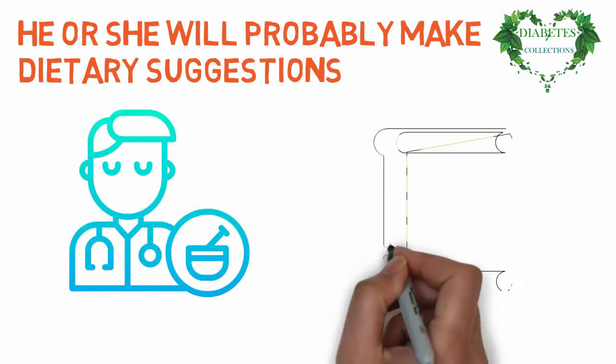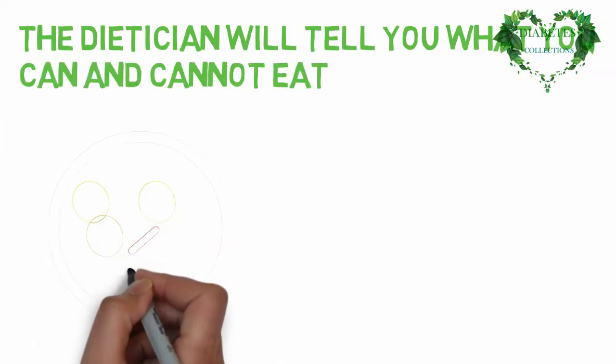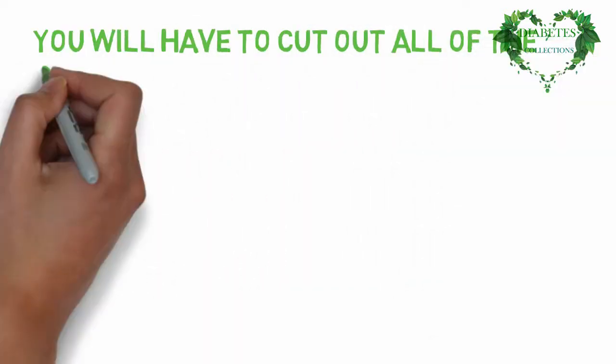The dietitian will tell you what you can and cannot eat, and what you can eat in moderation. You will have to cut out all of the sugar from your diet.